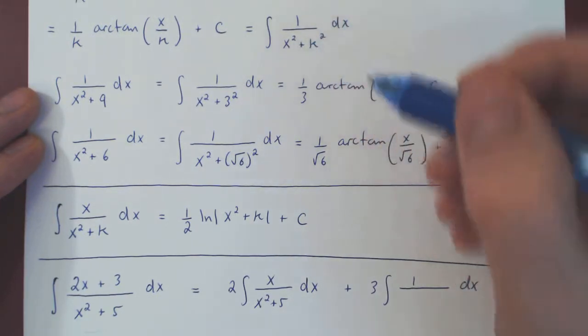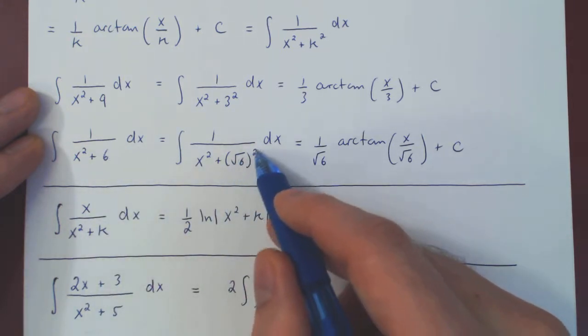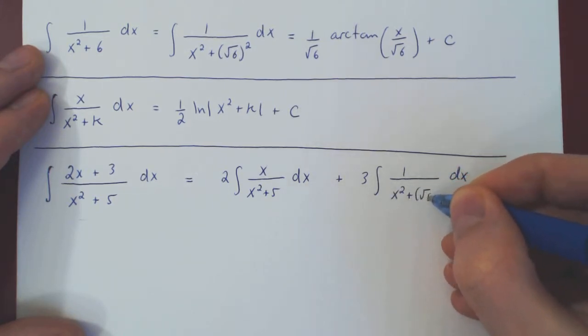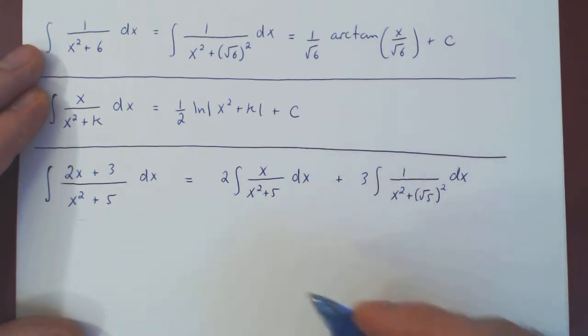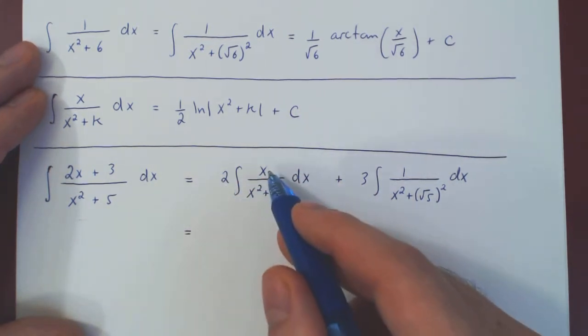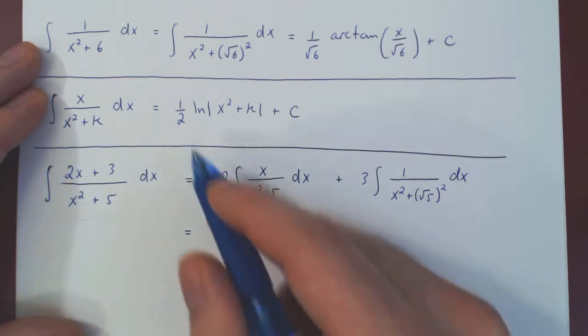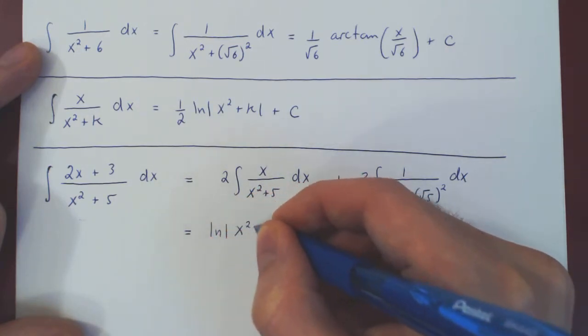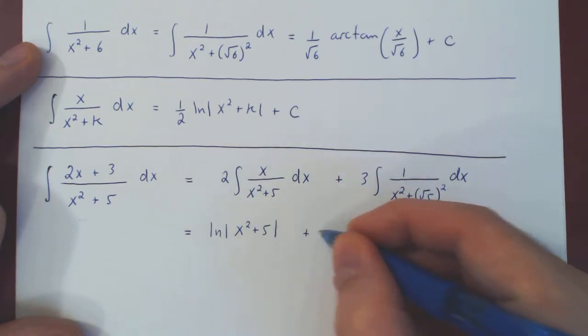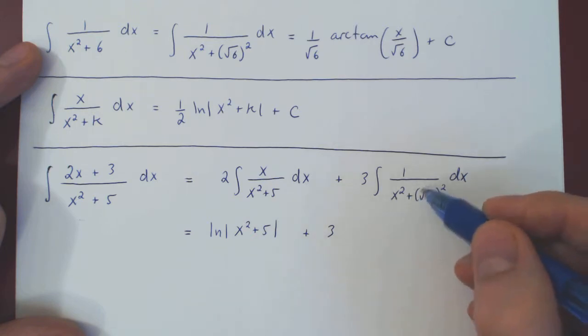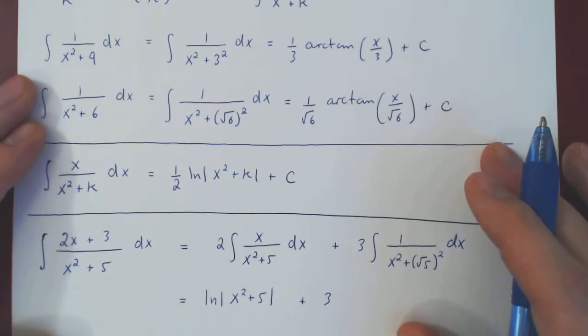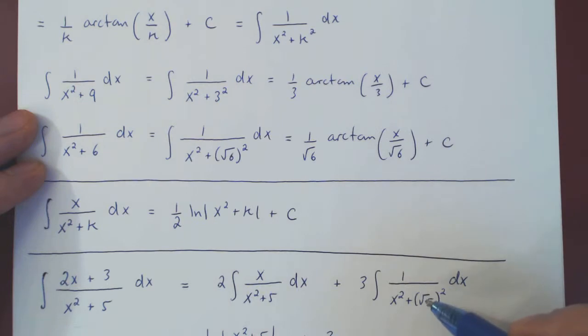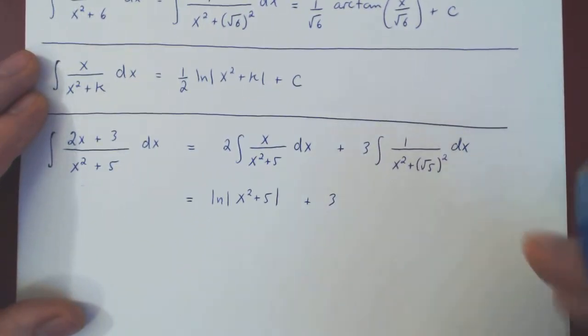And so in the end, now using our two special integrals, we get here two times a half the ln of this, but two times a half will cancel, and we'll be left with the ln of our denominator plus 3 times the integral of 1 over x squared plus k squared, which we know is 1 over k. So 1 over root of 5, arctan of x over k, arctan of x over root of 5. And this will complete our integration.